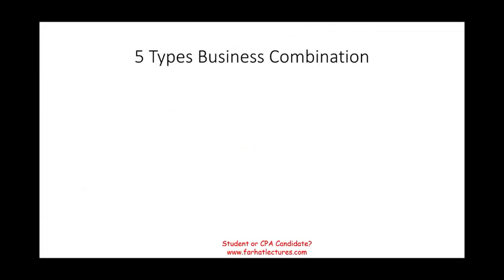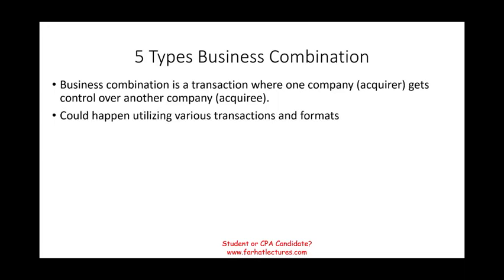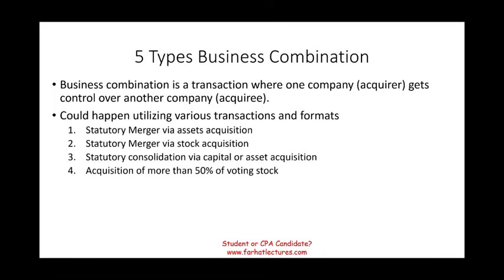There are five types of business combination. A business combination is a transaction where one company — the acquirer — gets control of another company. The five types are: statutory merger via asset acquisition, statutory merger via stock acquisition, statutory consolidation via asset acquisition, acquisition of more than 50% of the common stock, and variable interest entity.